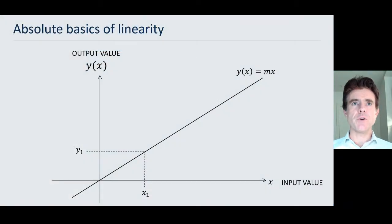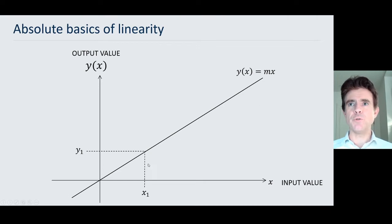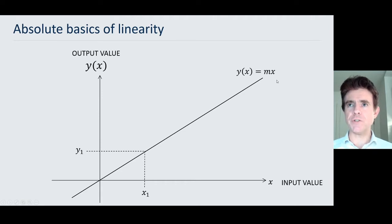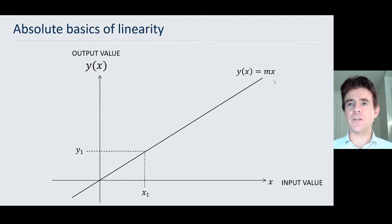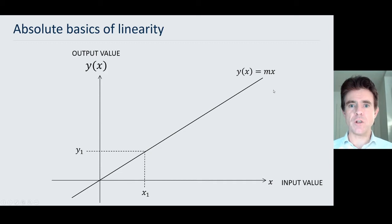Starting off with the very basics, this is the very familiar linear equation. You'll notice it's of the form y equals mx, just like a gradient of a line — not even y equals mx plus c, because if we have the offset, then in the context that we're looking at, that wouldn't even count as a properly linear mapping. So here we've just got y equals mx, just a line.